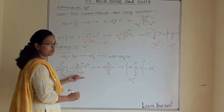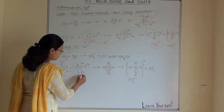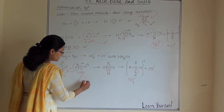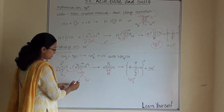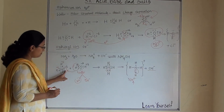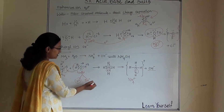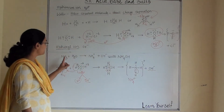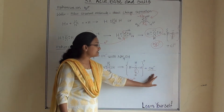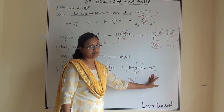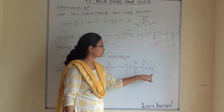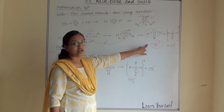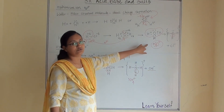The OH minus will be left behind from the water molecule. Within the water molecule, there is charge separation like H+ and OH minus. So H+ combines with ammonia and OH minus is left behind. That is why a base always gives OH minus — hydroxyl ion — whereas an acid always gives H3O+ — hydronium ion.